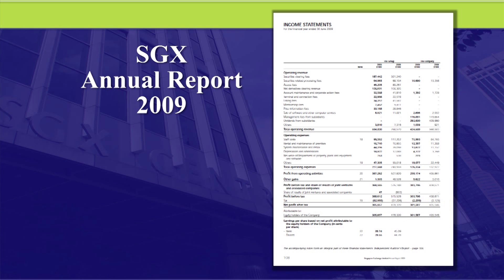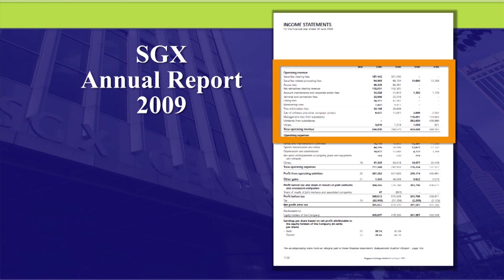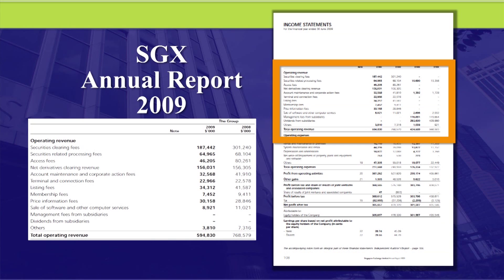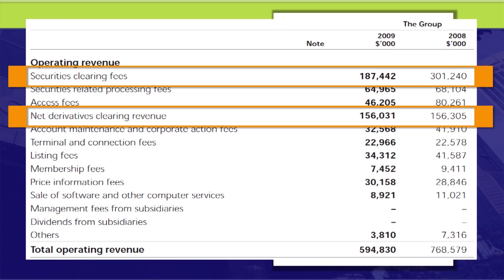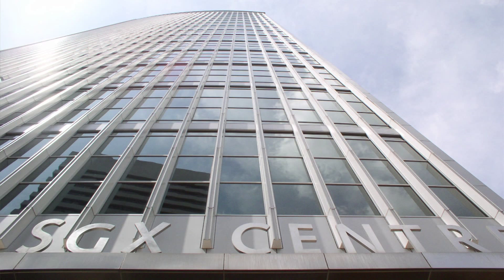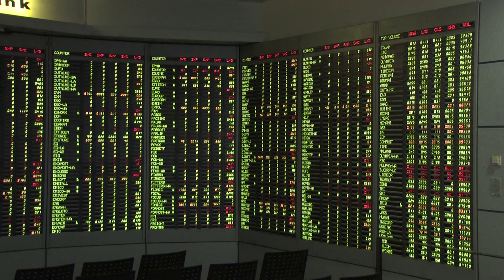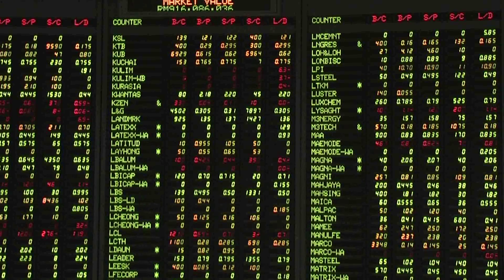Now let's look at the why and the how. If you look through sales, the breakdown gives you 11 line items. The most significant of these are really two: the securities and derivatives clearing fees. These two items alone contribute to 58% of total sales, so you should pay more attention to these items. About two-thirds of the revenue decline were due to the fall in securities clearing fees, and this was obviously because equity markets globally were generally quieter due to the financial crisis.